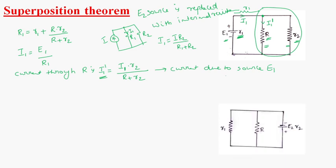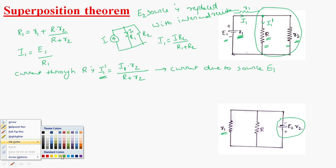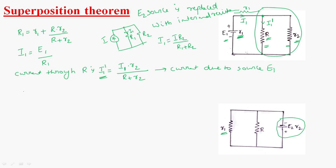Now let us consider the circuit with only the E2 source. E2 has internal resistance R2, and E1 is replaced with its internal resistance R1. The equivalent resistance is R2 plus the parallel combination of R and R1, that is R2 plus (R × R1)/(R + R1).